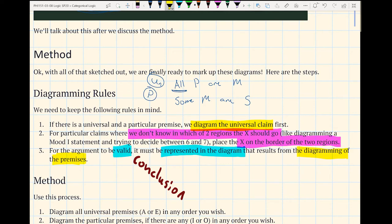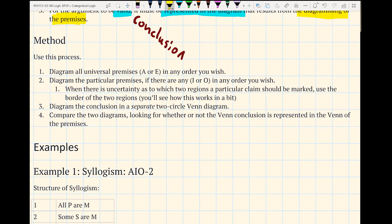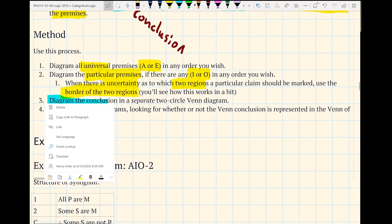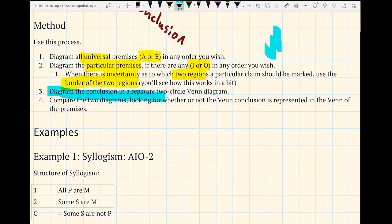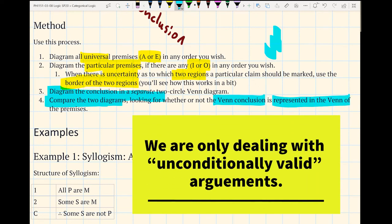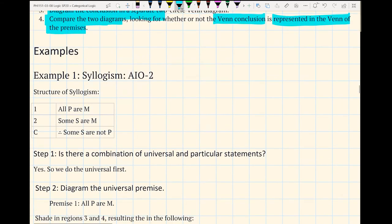Now let's talk about the method. And the method will look a lot like the rules, but just a little bit more explicit. First, we want to diagram all of the universal premises, so those are just A's or E's, and it doesn't matter in what order you do them. You can do the second premise first. You can do the first premise first. It doesn't matter. And then you move on to the particular premises, so the I's or O's, and you can do them in any order. The main thing is just to do the universal premises first. And then we have that if when there's uncertainty in two regions, you use the border of the two regions, diagram the conclusions in a separate Venn diagram. And then you want to compare the two. And if the Venn conclusion is represented in the Venn of the premises, it's valid.